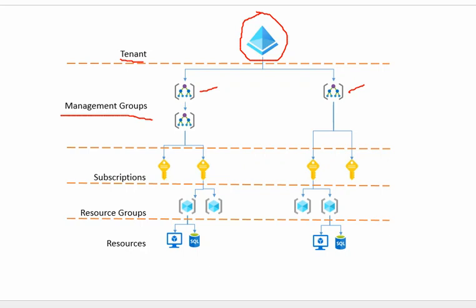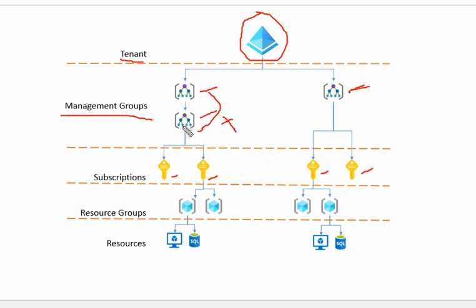Management groups are created to manage access, policy, and compliance across multiple subscriptions. Under one management group we may have further nested management groups. Under those management groups we may have multiple subscriptions, as shown in the diagram. Another management group may have a subscription directly without a sub-management group — both possibilities are displayed here.